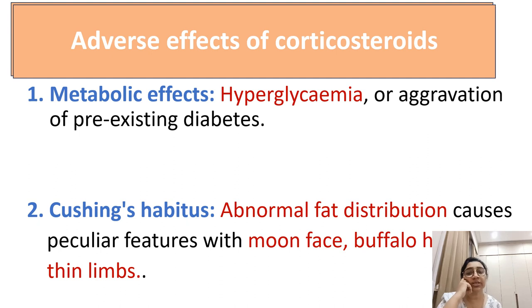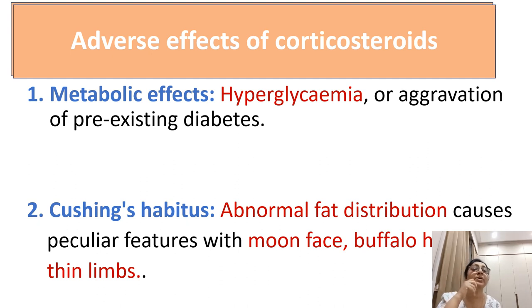First is the metabolic effect on carbohydrate metabolism. Hyperglycemia occurs or aggravates pre-existing diabetes due to stimulation of glycogen deposition in the liver, as well as gluconeogenesis from other sources like amino acids, and decreased peripheral utilization of glucose. Ultimately, glucose levels increase in the blood.